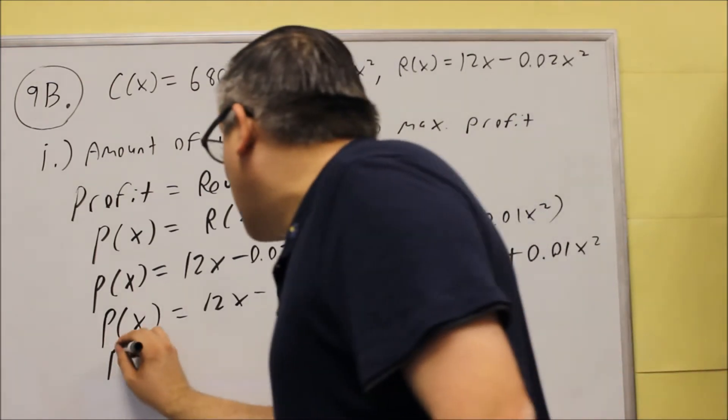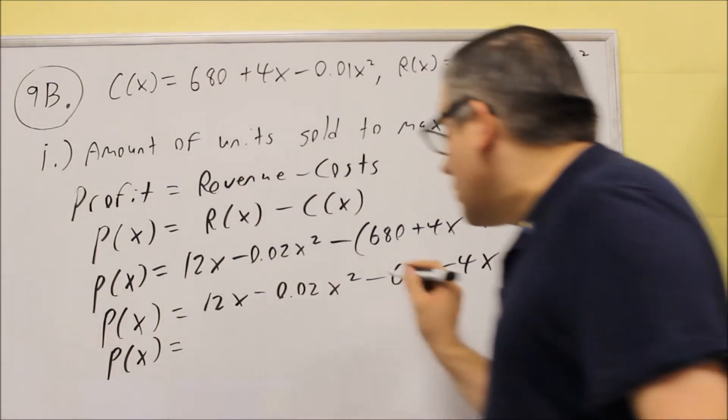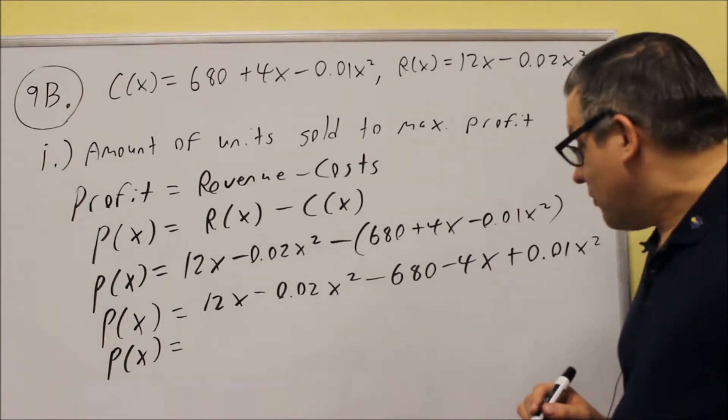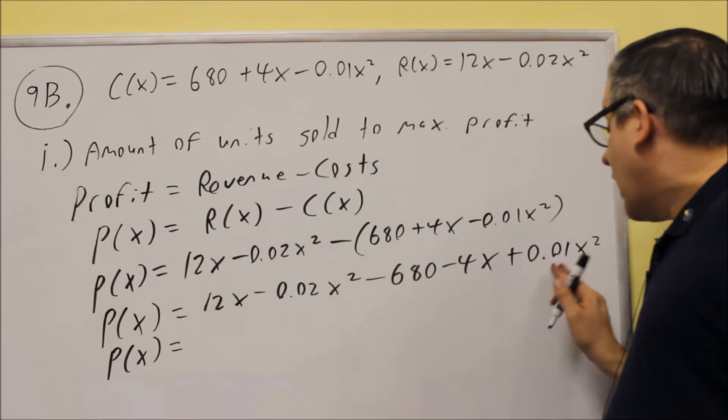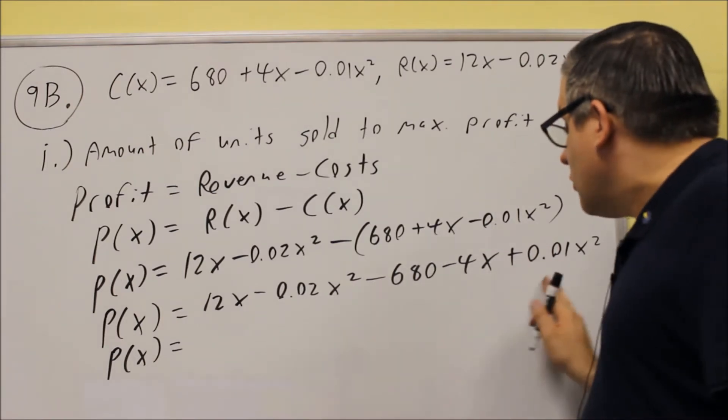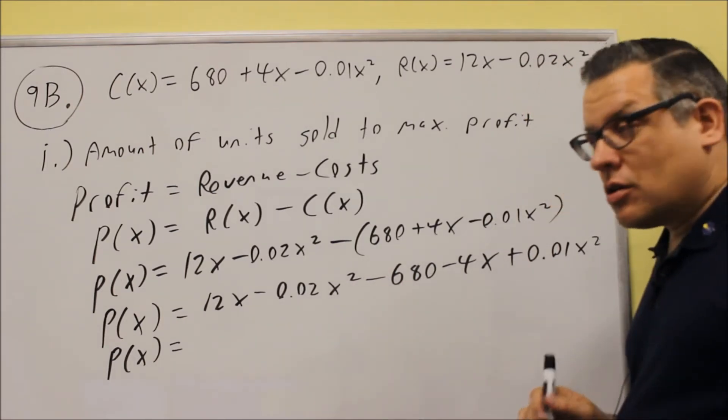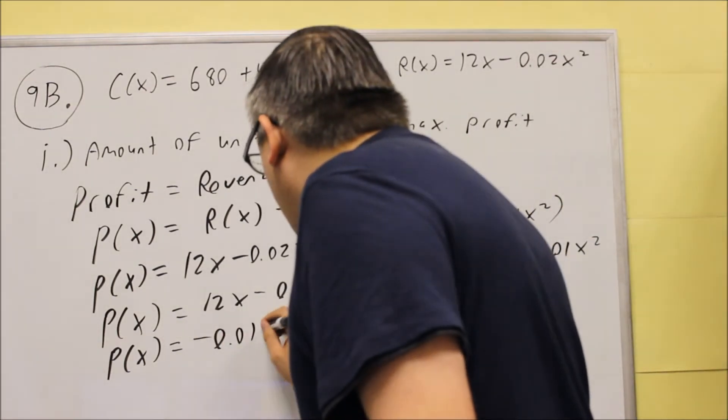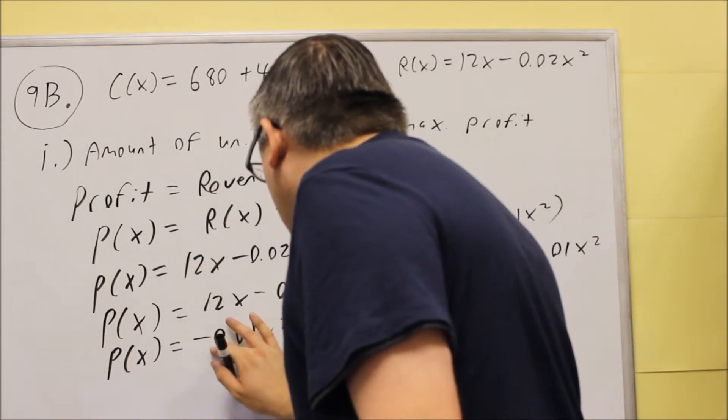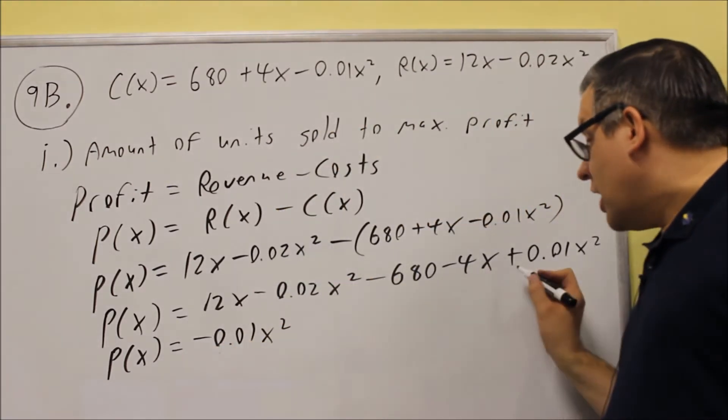So now, we're going to do P(x), we've got to add the like terms together. So for this, we've got the negative 0.02x squared, and we're adding the 0.01x squared. So these two are going to be added together. And so when you do, you're going to get negative 0.01x squared.